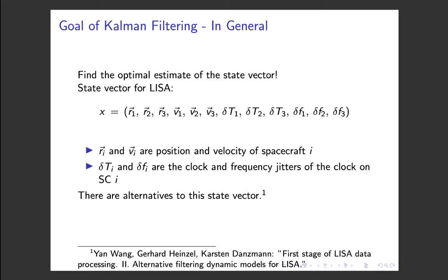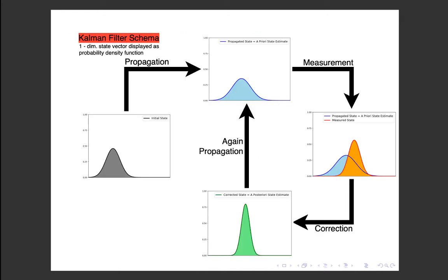In general, the goal of Kalman filtering is to find optimal estimates of a system's state vector. In the case of LISA, such a state vector could consist of the positions and the velocities of the three spacecraft, and the timing and frequency jitters of their ultra-stable oscillators. So this would give us a 24-dimensional state vector. However, there are alternatives to this state vector.